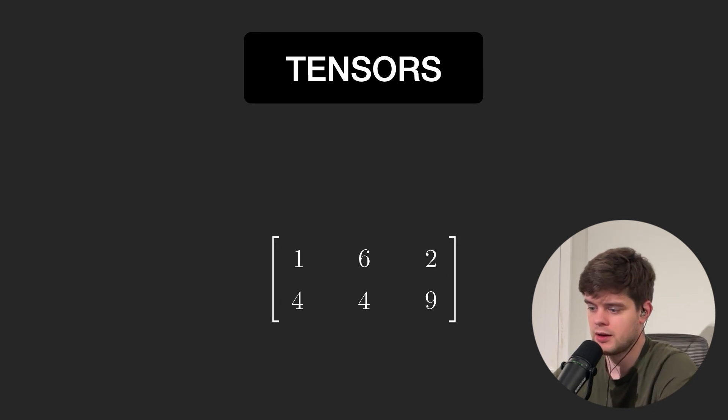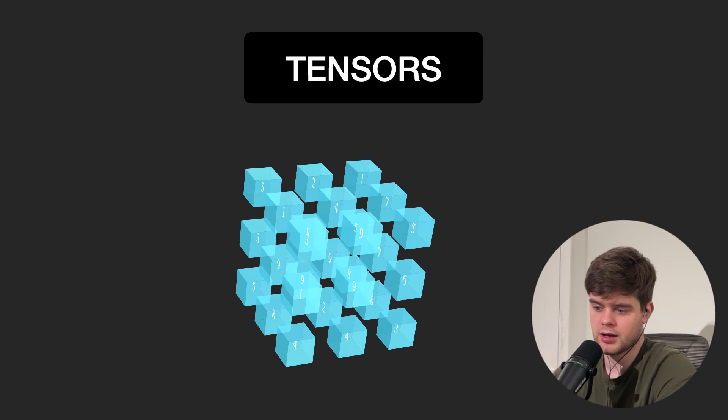And tensors - tensors are generalized form of n-dimensional arrays. So scalars, vectors, matrices can be called tensors. If a matrix is a two-dimensional tensor, a three-dimensional tensor can be visualized as a cube of numbers, and higher dimensional tensors are, as you can imagine, tricky to visualize.